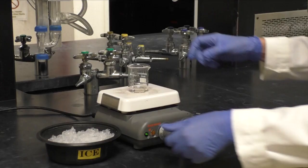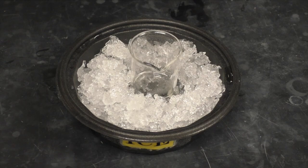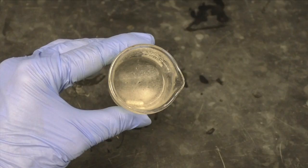While it's stirring, prepare an ice bath. Once you see a little bit of precipitate forming, place the beaker in the ice bath. Additional product will form slowly.